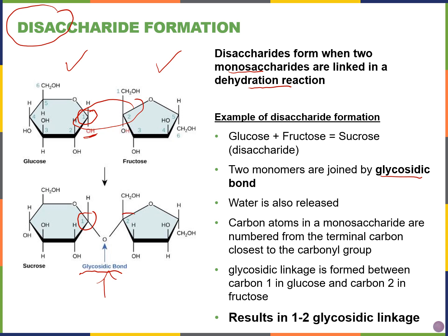This is an alpha 1-2 glycosidic bond — between carbon one and carbon two. If the hydroxyl group on carbon one of the glucose molecule were above the carbon, that would be a beta glycosidic linkage instead.